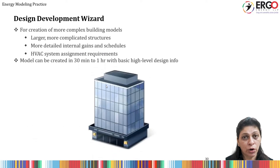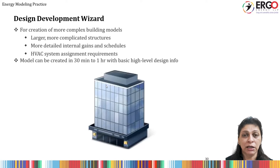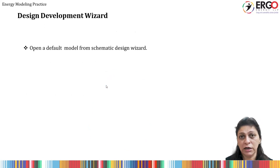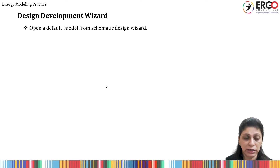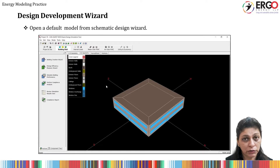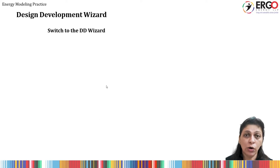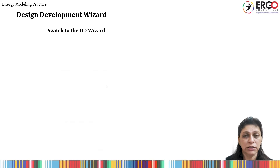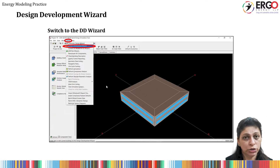Large and more complicated surfaces with multiple HVAC systems and complex zonings are the candidates to be handled with DD wizard, and that is detailed in these two modules. The module starts with conversion of an existing SD wizard to DD wizard, or using a new project with DD wizard — and that is shown.